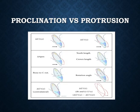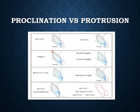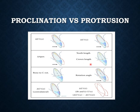Proclination is the anterior positioning of a tooth or group of teeth where the long axis is tipped labially. Protrusion is the anterior positioning of a tooth or group of teeth while keeping their long axis at a normal inclination. When the long axis is maintained, it is protrusion; when the long axis is tipped in the labial direction, it is proclination.